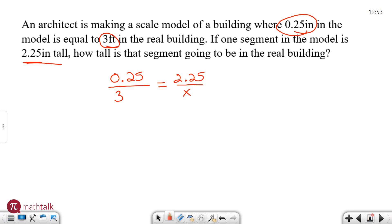So the way to solve for proportions is to do what's called cross multiplying. Which basically means take these two numbers, multiply them together, take these two numbers, multiply them together and set them equal to each other and solve. So 0.25 times x is 0.25x that's going to be equal to whatever 3 times 2.25 is which happens to be 6.75.